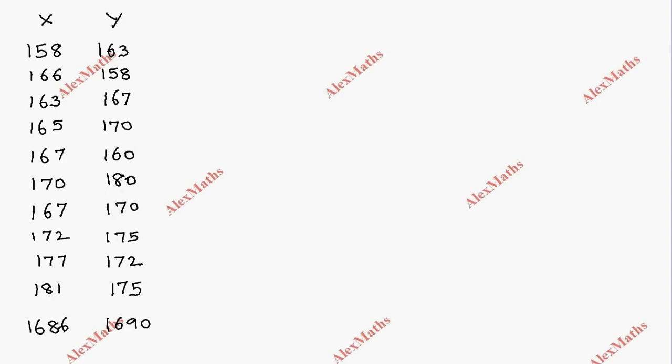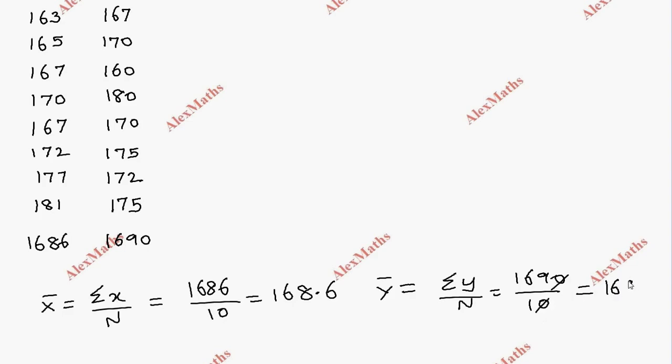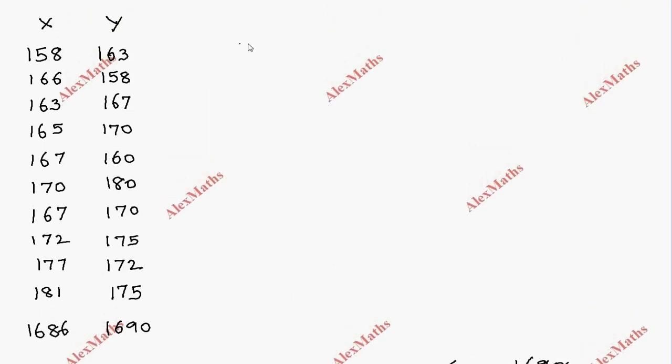The total number of data points is 10. For the mean calculation, X bar equals sigma X by N, so 1686 divided by 10 equals 168.6. Similarly, Y bar equals 1690 divided by 10, which equals 169.